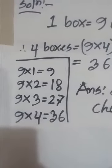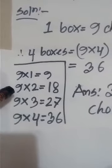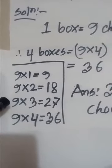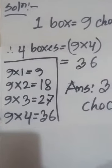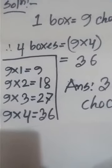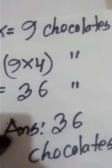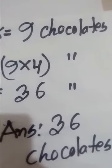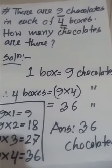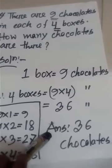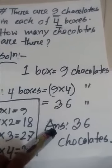From the times table of 9: 9 times 1 is 9, 9 times 2 is 18, 9 times 3 is 27, and 9 times 4 is 36. So, 9 times 4 is 36. Our result is 36 chocolates. How many chocolates in 4 boxes? 36 chocolates.